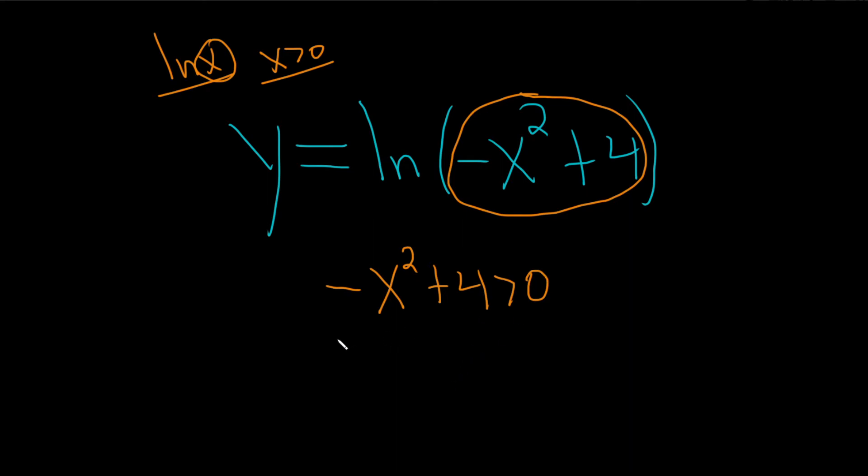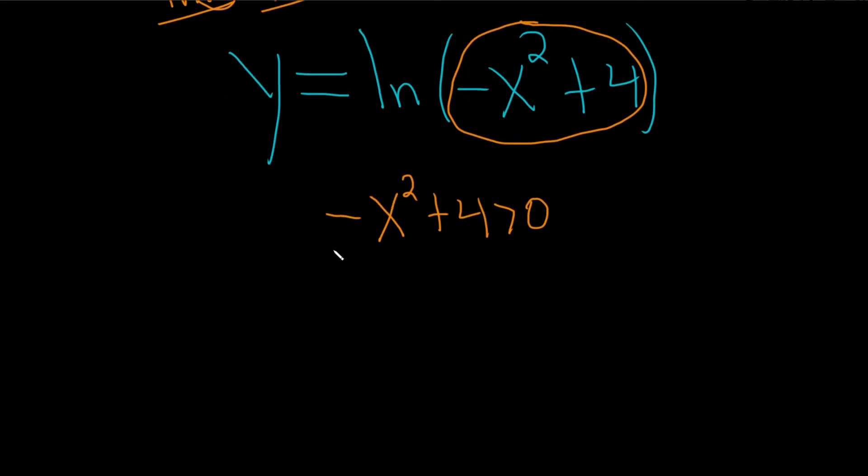Step 2 is to solve this inequality. So there's a couple ways to do this. Let's take a more elegant approach. So let's rename this. I'm going to let y be equal to negative x squared plus 4.